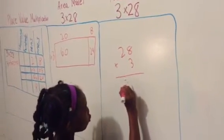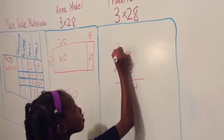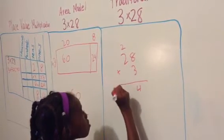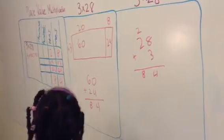8 times 3 equals 24, so we're going to regroup. 2 times 3 equals 6, and then we have to add the 2, so that equals 84, and I think that's close to 90, so I think that's correct.